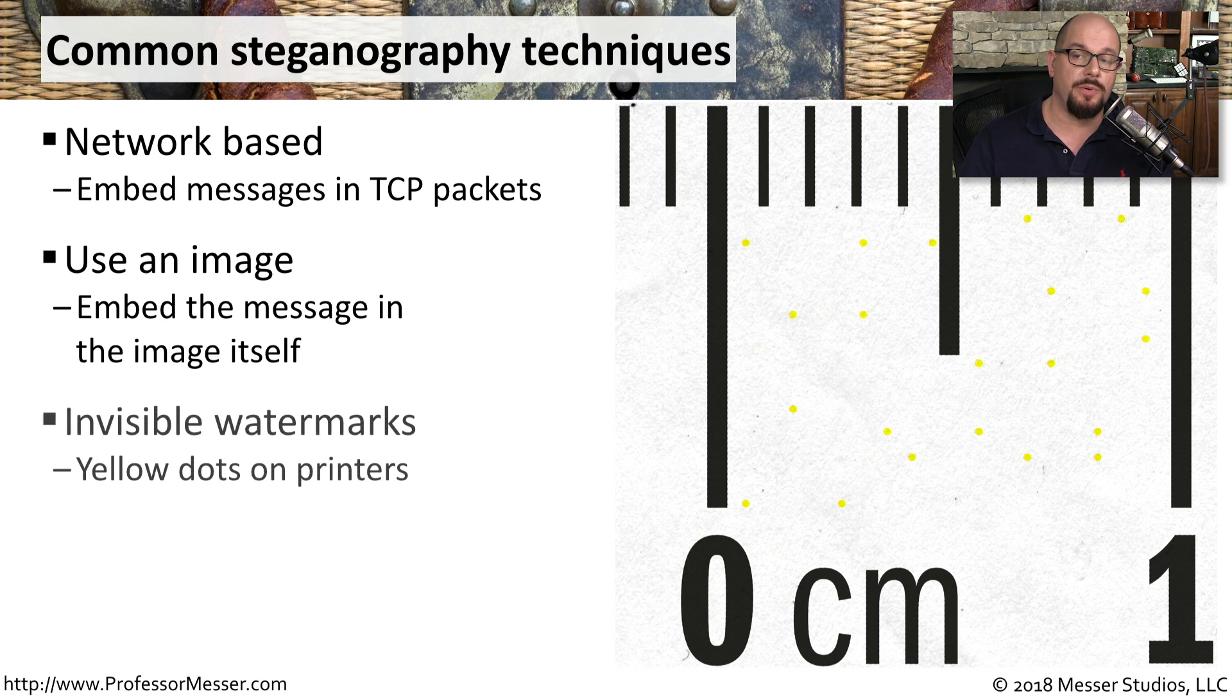You might also have steganography used on your laser printers. With printer steganography, you'll find that laser printers will put yellow dots on the page that identifies the exact printer and perhaps date and time and other forensic information.